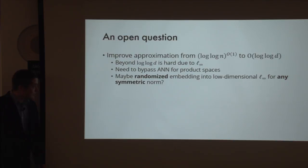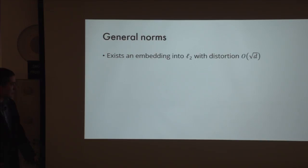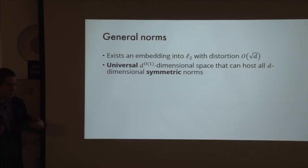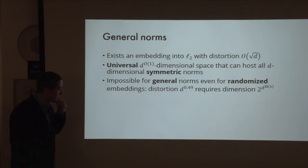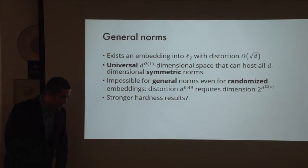Now let me talk about general norms. For general norms, the only result we know is to embed any norm into L_2 with distortion square-root D. Over this talk, I showed how to take any symmetric norm and embed it into a universal poly-D dimensional space that hosts all D-dimensional symmetric norms. For general norms, even for randomized embeddings, nothing like this is possible: even if you want to improve upon square-root D a little—say get distortion D^{0.49}—the required dimension is exponential. So you need new ideas.